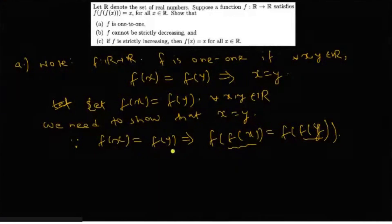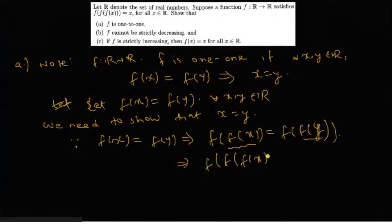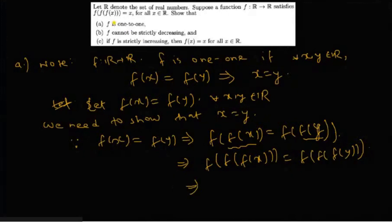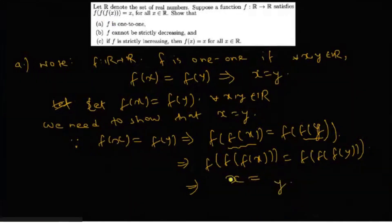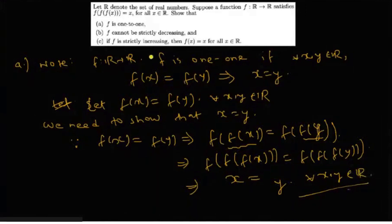For all x belonging to real numbers it is given that F(F(x)) = x, and similarly F(F(y)) = y. Therefore F(x) = F(y) implies x = y for every x, y belonging to the real numbers, which means that F is one-one.